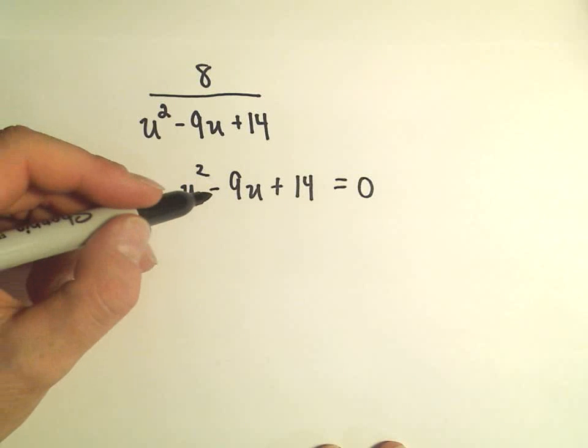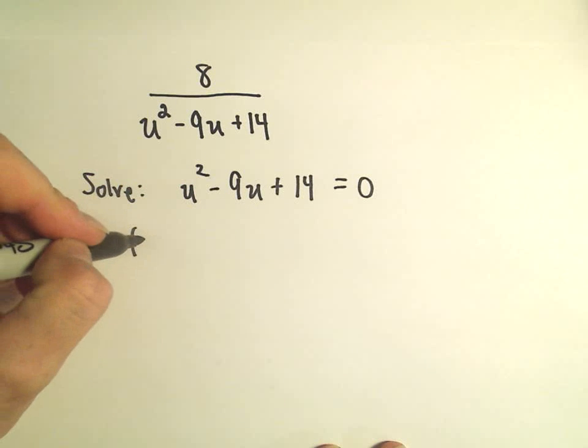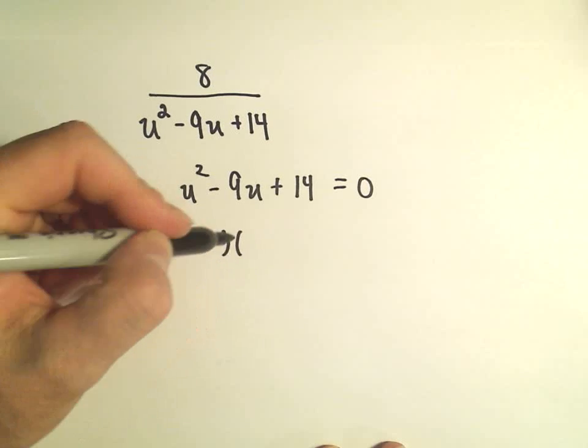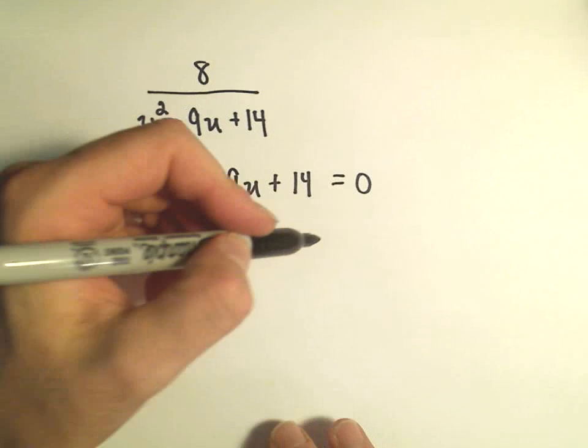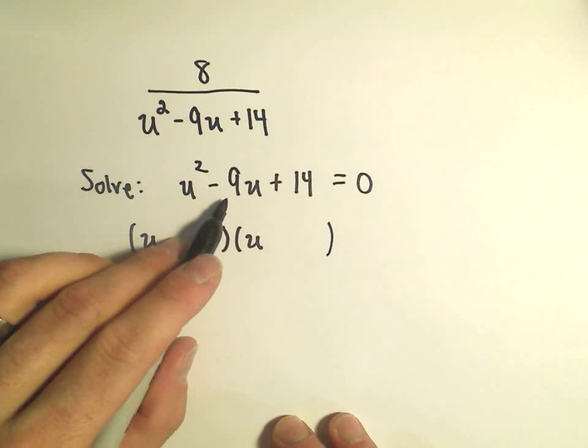Okay, so we have u squared minus 9u plus 14. I think this will hopefully factor without too much trouble. I'm looking for two numbers that multiply to positive 14 but add up to negative 9.